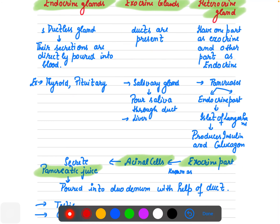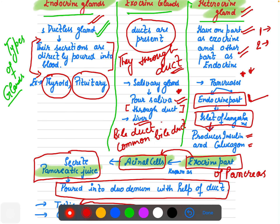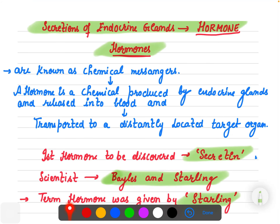Other examples of heterocrine glands are testes and ovaries. So pancreas, testes, and ovaries are heterocrine glands. Salivary glands are exocrine glands. Thyroid and pituitary are endocrine glands. To summarize: three types of glands — endocrine, exocrine, and heterocrine.